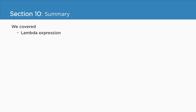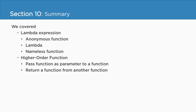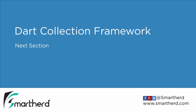We have reached the end of this section. In this section, we first checked out what is a lambda expression — a lambda expression is just an anonymous function, also called a nameless function, because it does not contain any name, but you can assign it to a variable. Then we explored higher-order functions, where you can pass a function as a parameter or return another function. And finally, we checked out closures, which is again a special kind of function. Coming up next, we will explore the Dart collection framework.